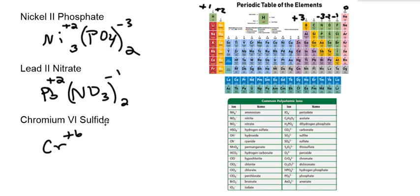So that's S with a minus two. I'll write S and a minus two. Now we crisscross that - we'll bring the two down here and the six here. Now remember our method is crisscross charges, check for simplification. This one, both of these are divisible by two, so then my final answer is going to be CrS3.